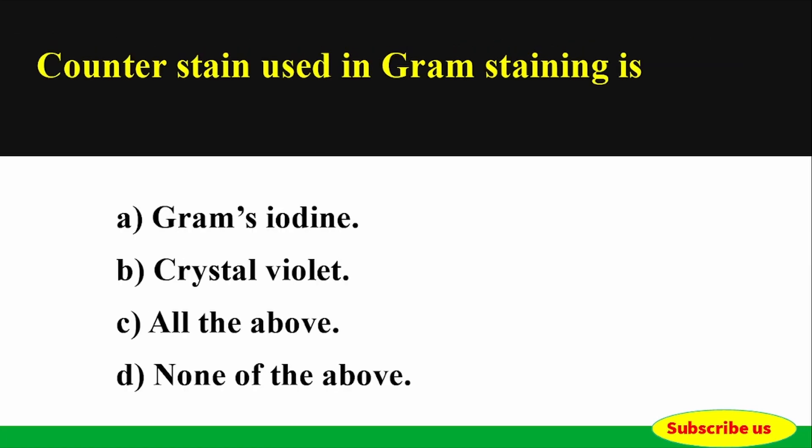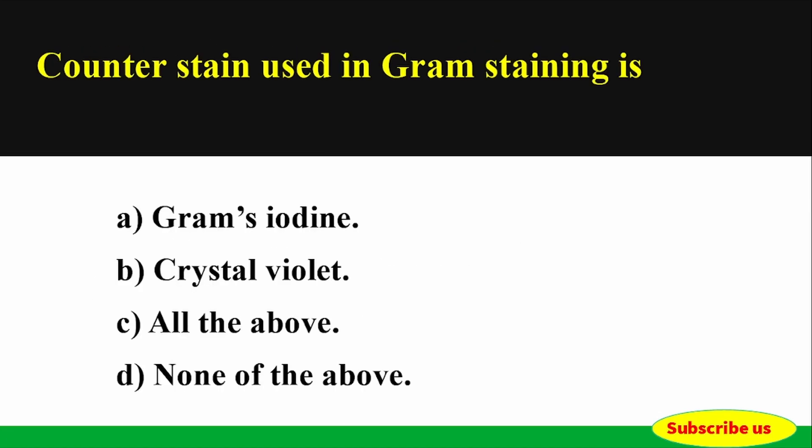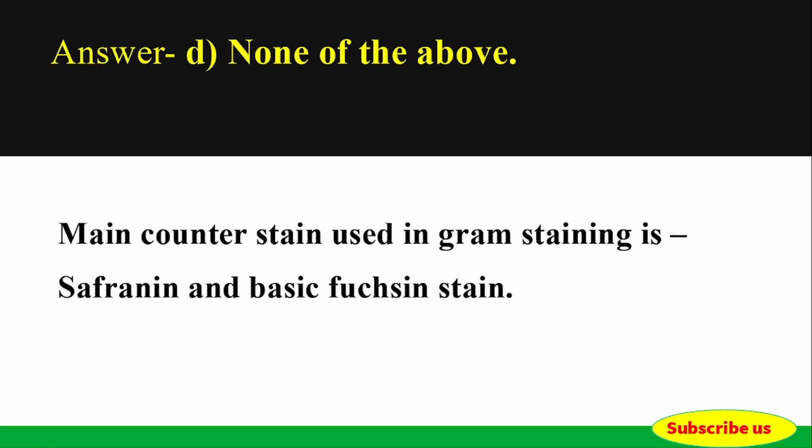Question: The counter stain used in Gram staining is — Options: A) Gram side in Crystal Violet, B) All the above, C) None of the above. Correct answer: Option D — None of the above. The main counter stain used in Gram staining is Safranin and basic fuchsin stain.